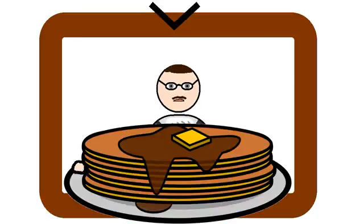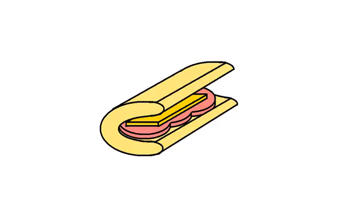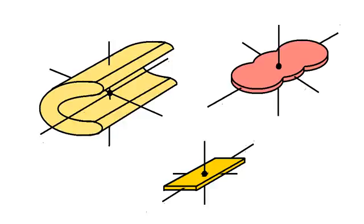Using the Ham Sandwich Theorem, we can take this into the third dimension. 3D objects also have centroids, so with a single cut of a knife, you can chop three objects into perfect halves, provided the knife goes through all three centroids.